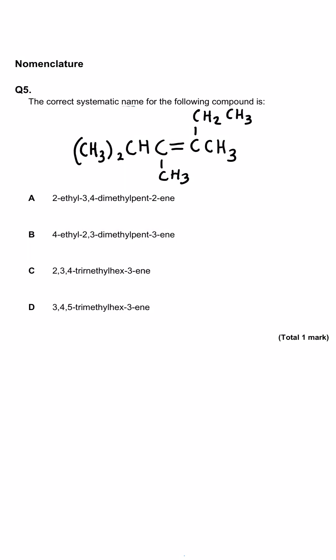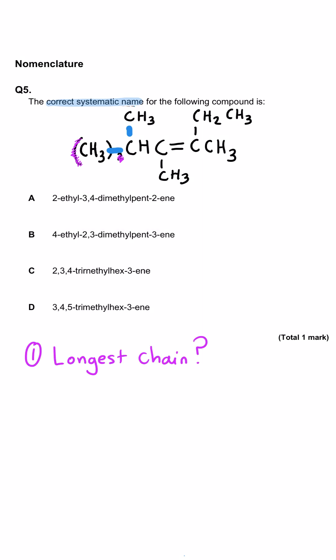In this question we're being asked for the correct systematic name for the following compound. The way this compound has been shown is a little bit confusing because of the (CH3)2 region of the structural formula. What that means is that this carbon has got two CH3 groups sticking out from it as well as a hydrogen and the connection to the next carbon atom. My first recommendation is that we get rid of the brackets and the two and draw bonds to the two now-separated methyl groups. This enables us to see more clearly what the longest chain length is in this molecule.